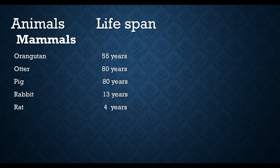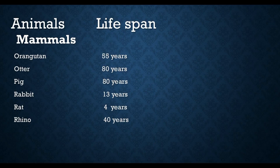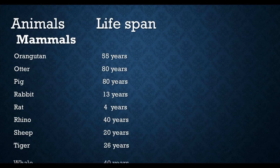Rat lifespan is 4 years. Reindeer lifespan is 40 years. Sheep lifespan is 20 years. Tiger lifespan is 26 years. Whale lifespan is 40 years.